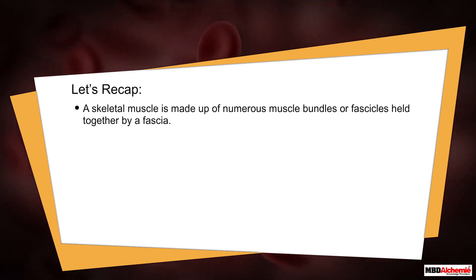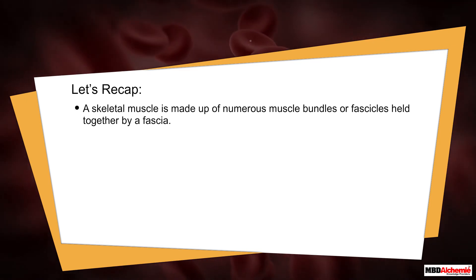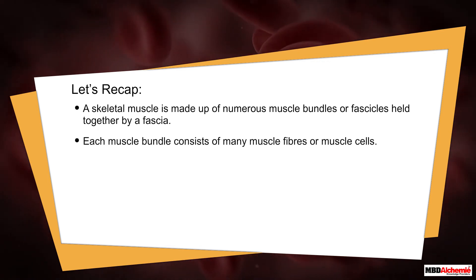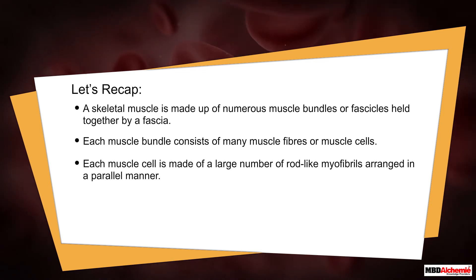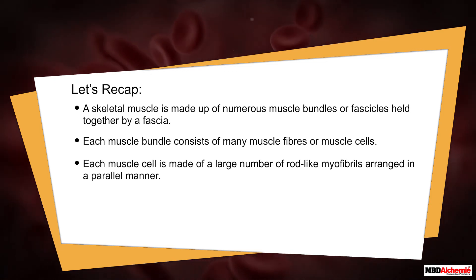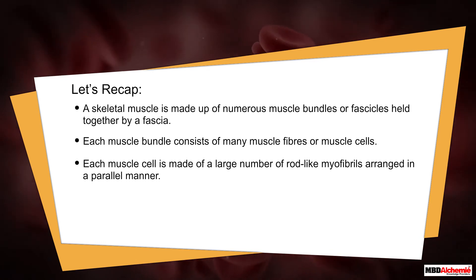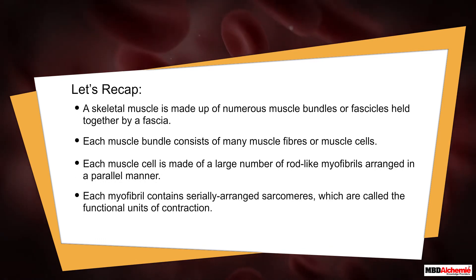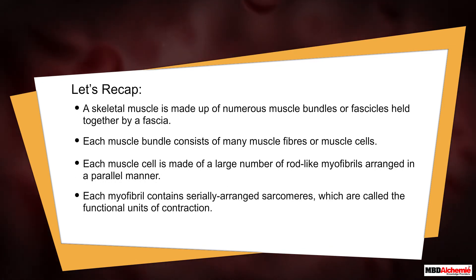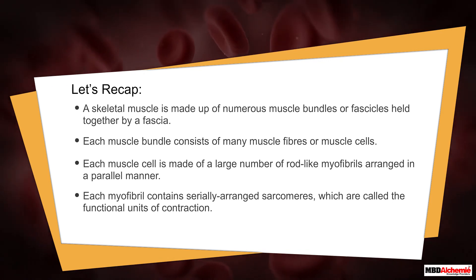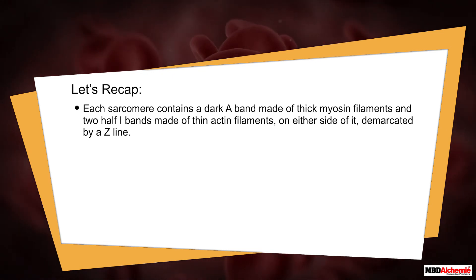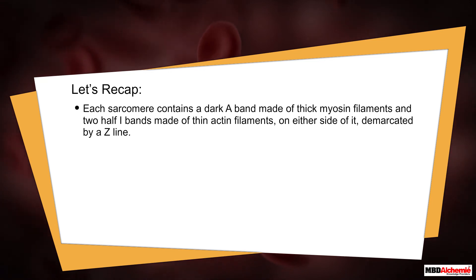Let's recap. A skeletal muscle is made up of numerous muscle bundles or fascicles held together by a fascia. Each muscle bundle consists of many muscle fibers or muscle cells. Each muscle cell is made of a large number of rod-like myofibrils arranged in a parallel manner. Each myofibril contains serially arranged sarcomeres, which are called the functional units of contraction. Each sarcomere contains a dark A band made of thick myosin filaments and two half I bands made of thin actin filaments on either side, demarcated by a Z line.